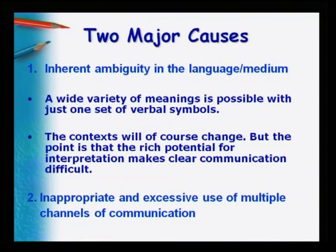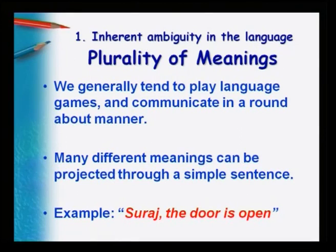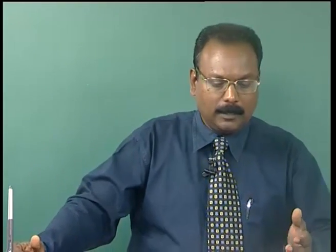The context will change, but the rich potential for interpretation makes communication difficult. You say one thing, and even if you specify the context, it is always possible for the receiver to take a totally different meaning — one not desired by you. The inappropriate and excessive use of multiple channels of communication also causes miscommunication. Language has plurality of meanings; language is polysemous and ambiguous. As Wittgenstein, the philosopher, said, we actually play linguistic games the way we play chess — keeping rules in mind and anticipating the other person's move.